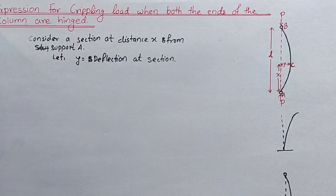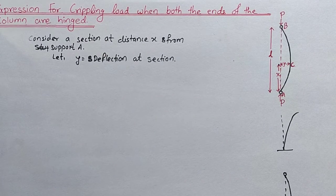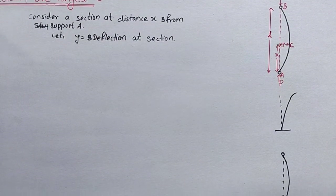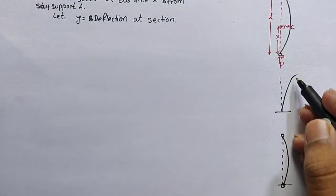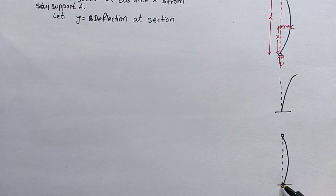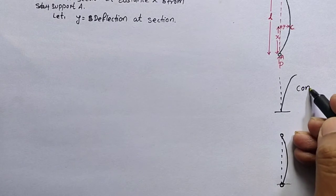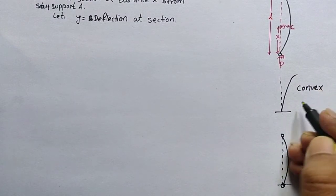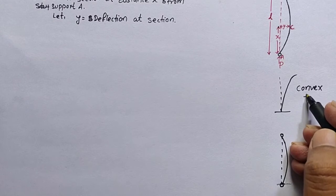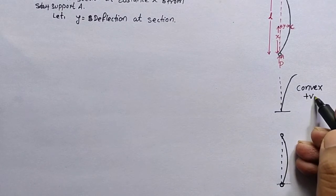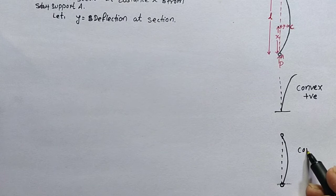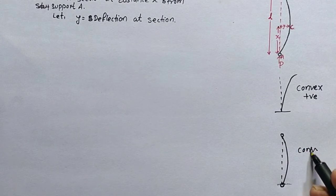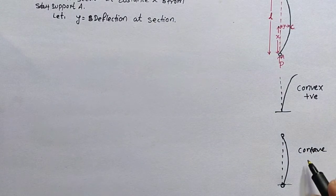Regarding the deflection of the long column, it takes place in two forms: either it is convex or it is concave. If the deflection is convex, the moment generated will be positive, and if it is concave, the moment generated will be negative.